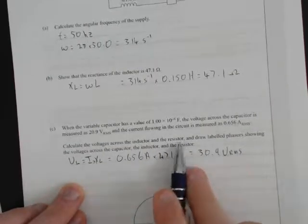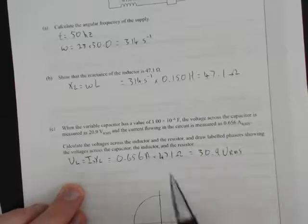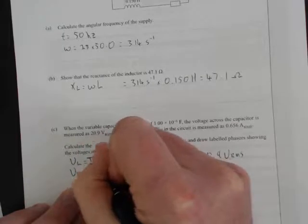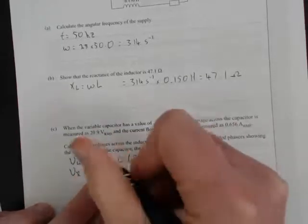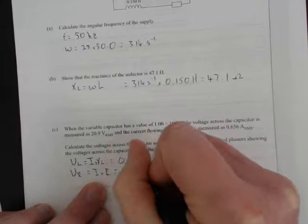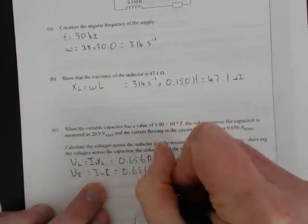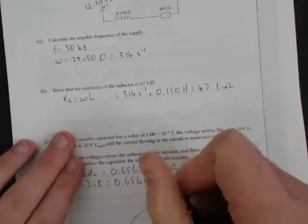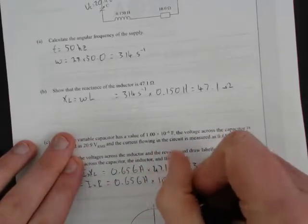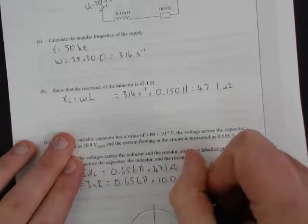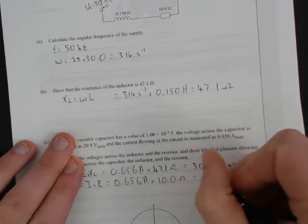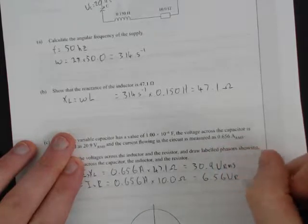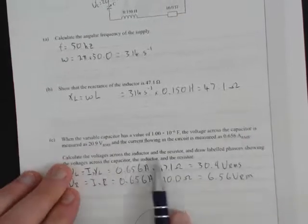Now, voltage flowing through the resistor. We've worked out the inductor, now the resistor. VR, using Ohm's law again, equals IR. Quite simple. I equals 0.656 amps times the 10 ohm resistor, equals 6.56 volts RMS. We've answered the first part of the question.